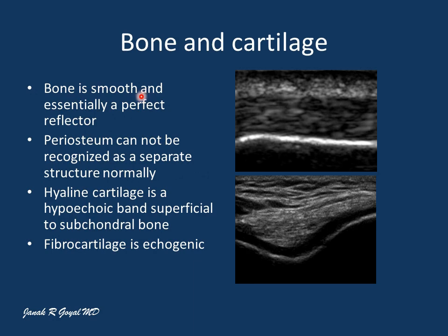The bone is smooth and essentially a perfect reflector — very smooth with strong posterior shadowing. The periosteum cannot be recognized as a separate structure normally, but if there is pathology, you may be able to see the periosteum as a separate layer. The hyaline cartilage is a hypoechoic band superficial to the subchondral bone, and fibrocartilage as mentioned is echogenic.